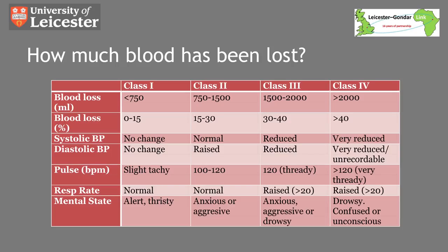This slide has been taken from the trauma literature and gives you an idea of how much blood has been lost. Both systolic and diastolic blood pressure, together with pulse, respiratory rate and mental state, are all good markers as to the severity of bleeding.